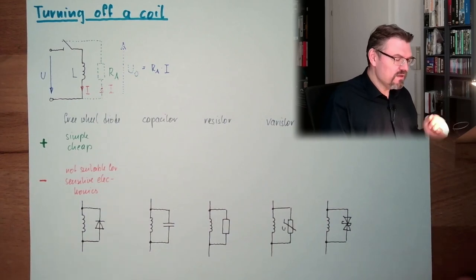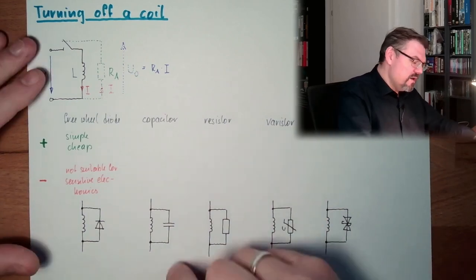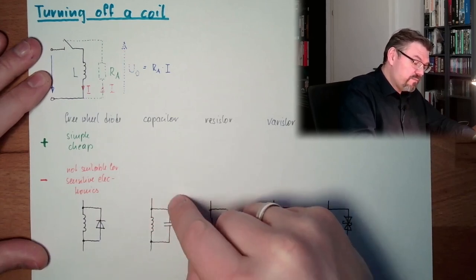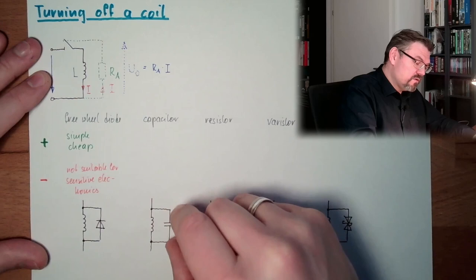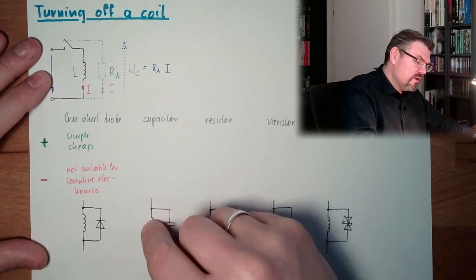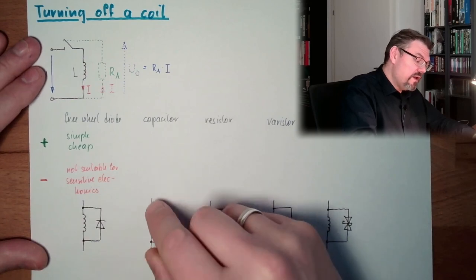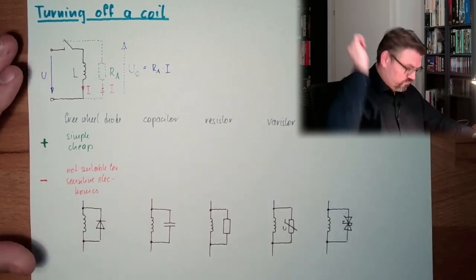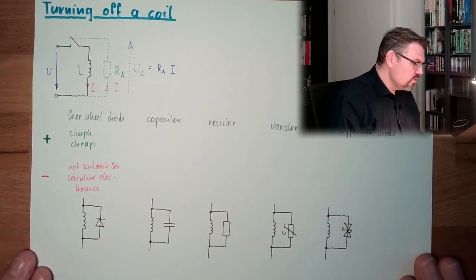Another method is a capacitor. So, current is going through, current is charging capacitor, when turned off, current is charging capacitor, capacitor voltage is going up, will stop the current from drowning, from going down, and this will slowly disappear. Also looking good, also looking good.